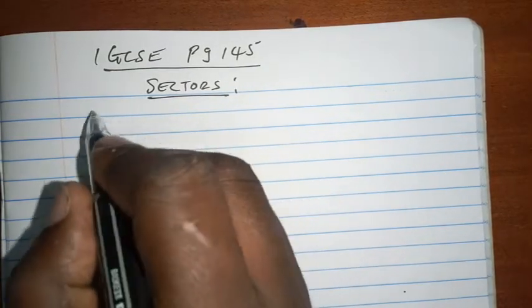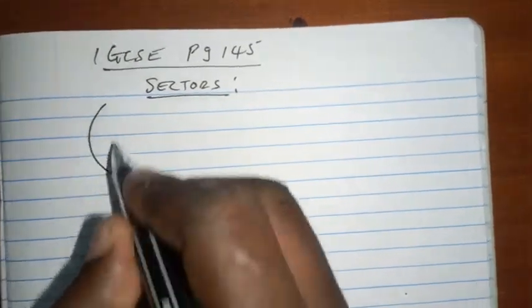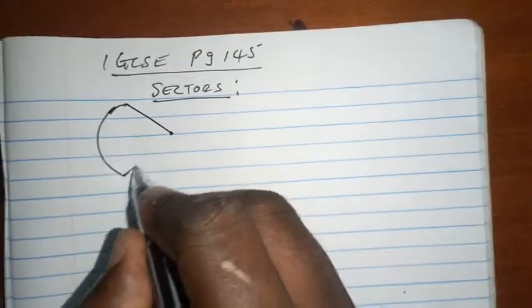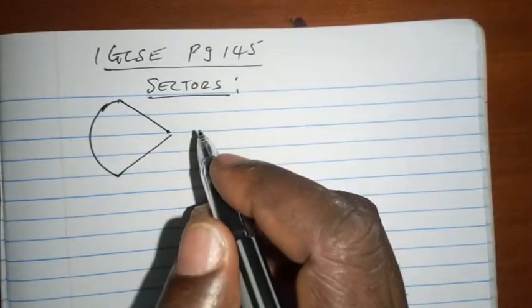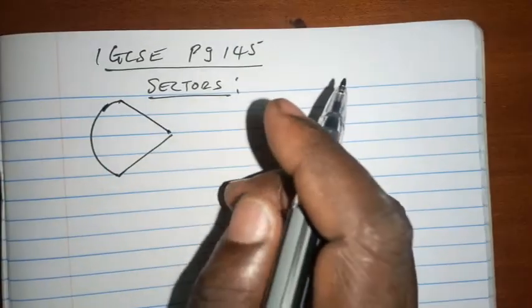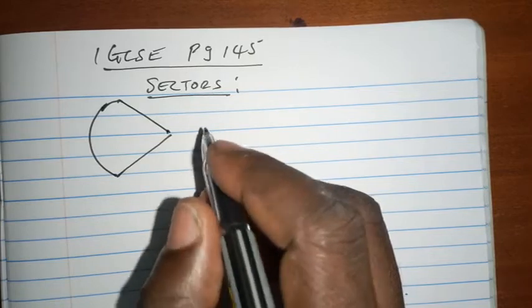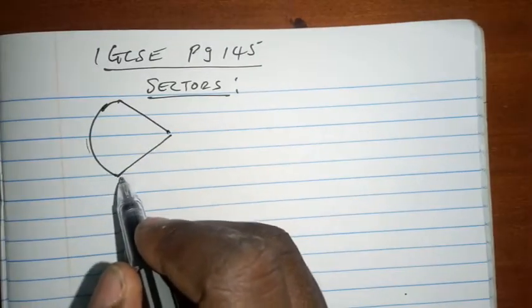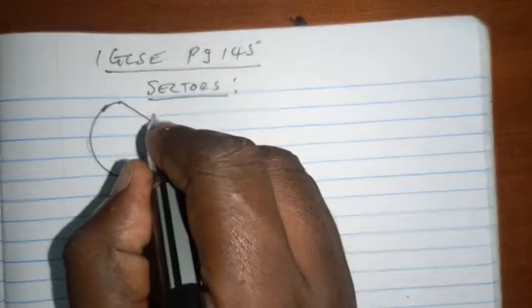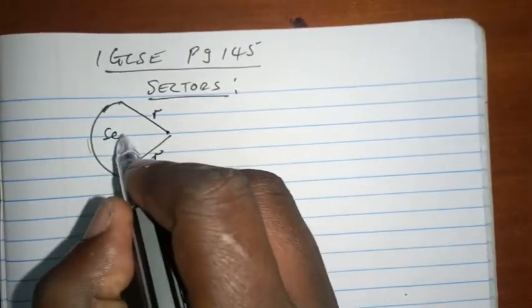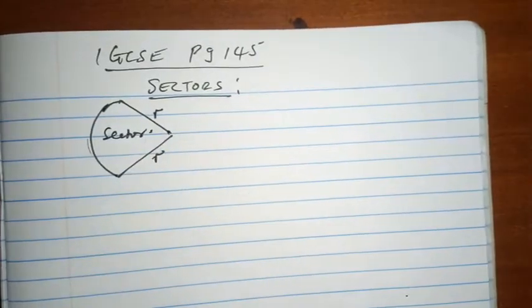What is a sector? A sector is a region of a circle whose perimeter is an arc of the circle and two radii. That is a radius, that is a radius. This is a sector of a circle.